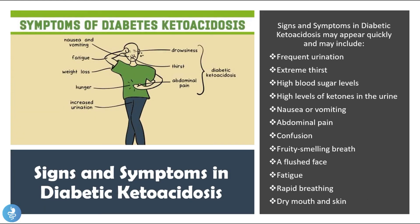Signs and symptoms of diabetic ketoacidosis may appear very quickly and include frequent urination, extreme thirst, high blood sugar levels, and high levels of ketones in the urine. The ketones spill into the urine because when they build up too much in the blood, the body tries to get rid of the excess, so the patient presents with high levels of ketones in the urine.